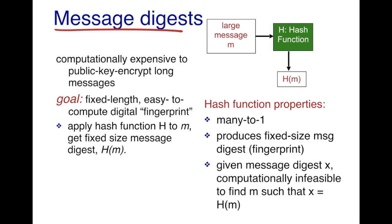So let's see how you create these message digests. If there's a large message, it is very computationally expensive to use public key cryptographic techniques to encrypt long messages. The goal is to create fixed-length, easy-to-compute digital fingerprints using hash functions. You apply a hash function H to M to get a fixed message size H(M). Hash functions have key properties: they are many-to-one, they produce a fixed-size message digest or fingerprint, and given some message digest X, it is computationally infeasible to find the original message M such that X equals H(M).